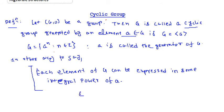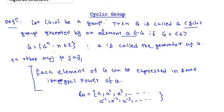If we can find an element a in G such that G equals the subgroup generated by a, then G is called a cyclic group generated by that element. Let's now look at some examples.